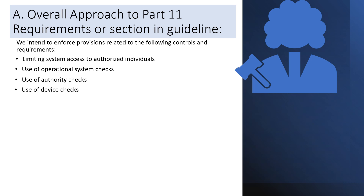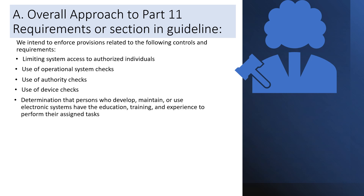Next is use of device checks. The user department is responsible for ensuring system checks which include but are not limited to hardware inspection and operational maintenance. Next is determination that persons who develop, maintain, or use electronic systems have the education, training, and experience to perform their assigned tasks. Whoever is going to use the system must be well educated, trained, experienced, and qualified.